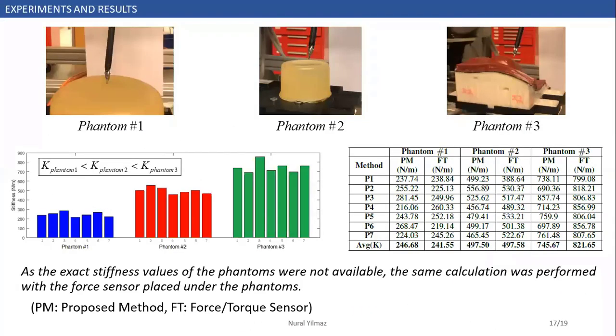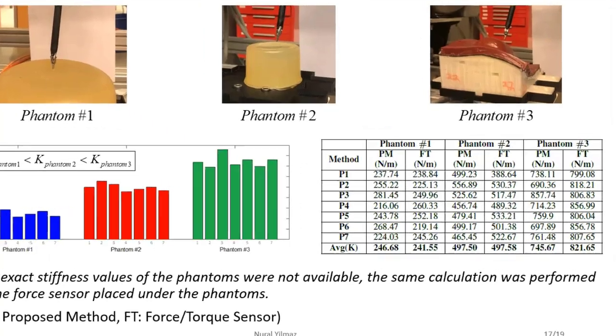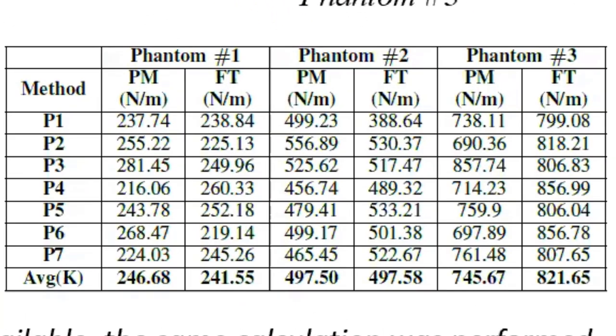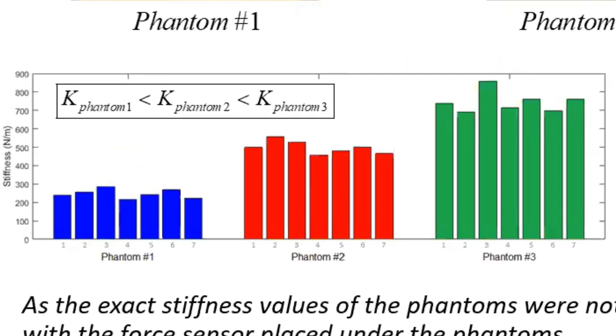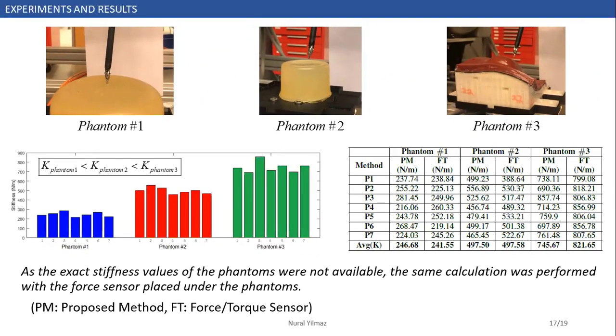Since the exact stiffness values of the phantom were not available, we performed the same calculation with force sensors placed under the phantom. This table shows that average stiffness values obtained by the proposed method and the sensors are close to each other. Also, the given bar graph shows that we found correct relation when we compare the estimated stiffness values. So, our method can be useful in surgical operations like tissue differentiation.